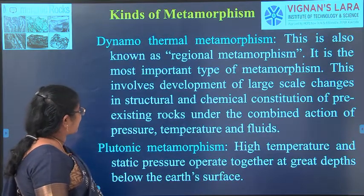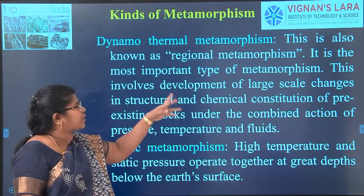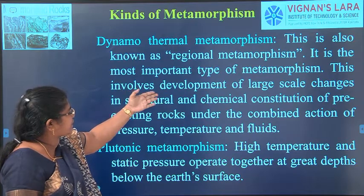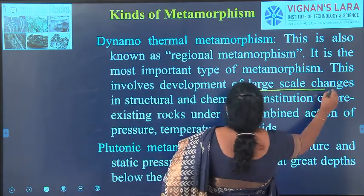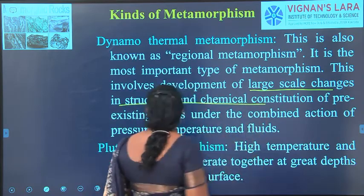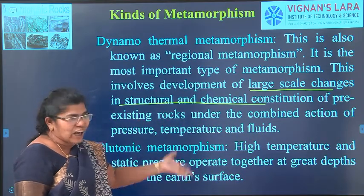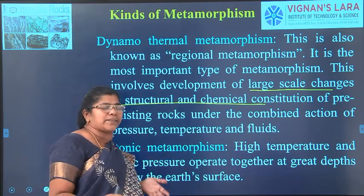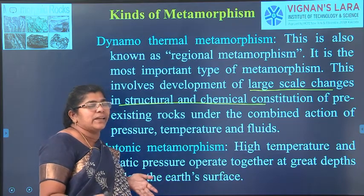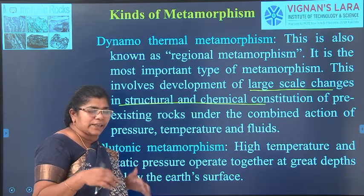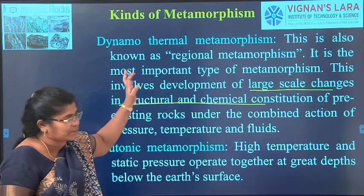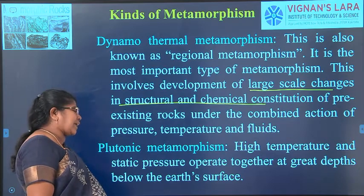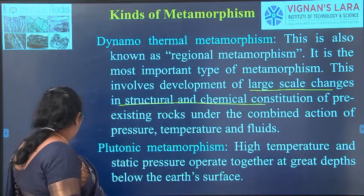There are five types. Dynamo-thermal metamorphism — here it is a regional metamorphism — involves the development of large-scale changes in structural and chemical composition of pre-existing rocks due to the combined action of pressure, temperature and chemical reaction. Then plutonic metamorphism, where high temperature and static pressure operate together at greater depths below the earth's surface.